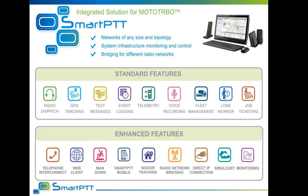SmartPTT is a highly customizable application that comes in several variants providing different sets of functionalities for different systems. Interface with the radio system can be done via control stations or via IP connection to MotoTURBO repeaters. The dispatcher software gives the opportunity to control the flow of data and voice in a radio network, request location of subscribers, and monitor the state of repeaters. SmartPTT also provides tools such as a web client and file transfer software, and can connect to a PBX to give subscribers PBX interconnection from the radio network.